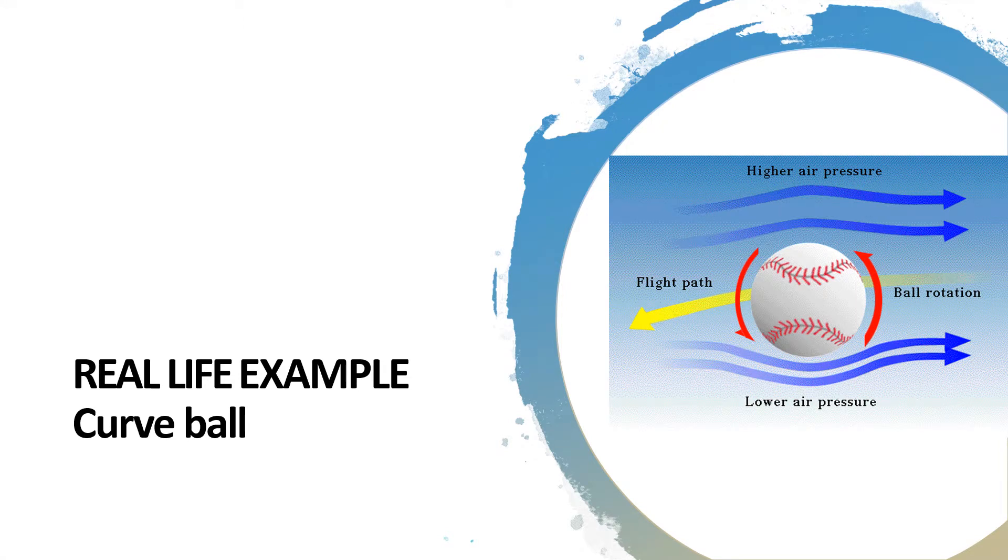Another example is a curve ball. When the ball is flying through air and rotating in one direction as shown in the picture, the air on the lower side has a higher speed which causes lower pressure, and the air flowing over the top of the ball has a lower speed, generating higher pressure.